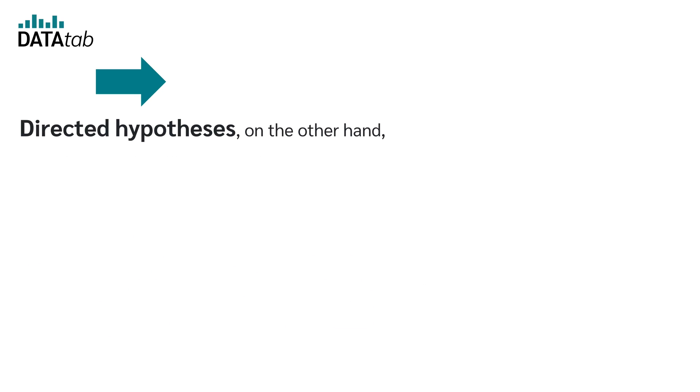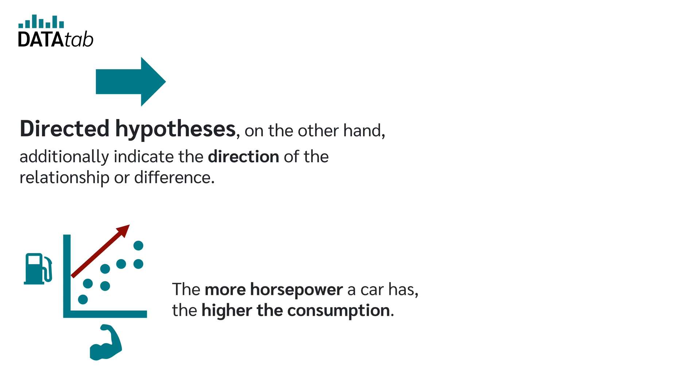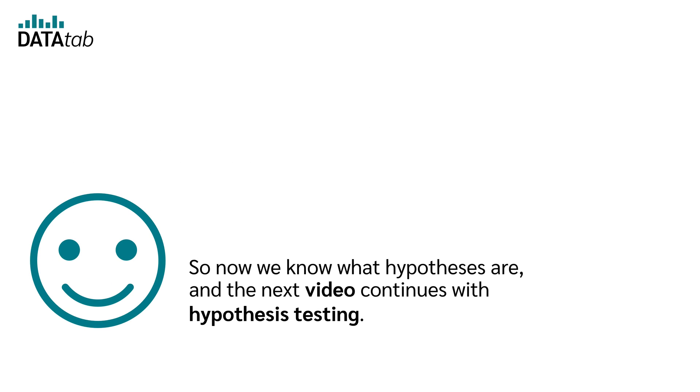Directed hypotheses, on the other hand, additionally indicate the direction of the relationship or difference. Men earn more than women. The more horsepower a car has, the higher the consumption. So now we know what hypotheses are and the next video continues with hypothesis testing.